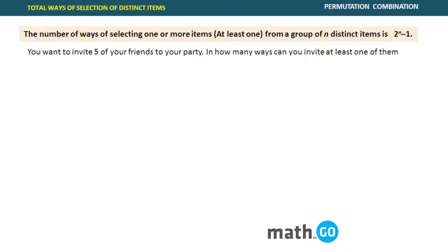Now let's move to the topic: total number of ways of selection of distinct items. This is divided into particular criteria — first we'll talk about distinct elements and then we'll also talk about identical elements.